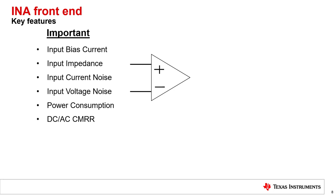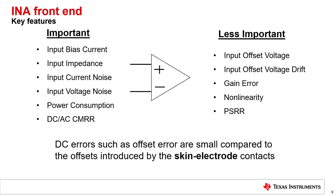Not important: generally DC specifications like offset, gain error, and non-linearity do not matter because the offset of the skin electrode contacts are typically much larger than errors introduced by an INA. In addition, drift is not usually a concern because the temperature range of the application is typically narrow. Finally, PSRR is generally not a concern if power supply design is done properly with adequate placement of power supply sources and decoupling capacitors.